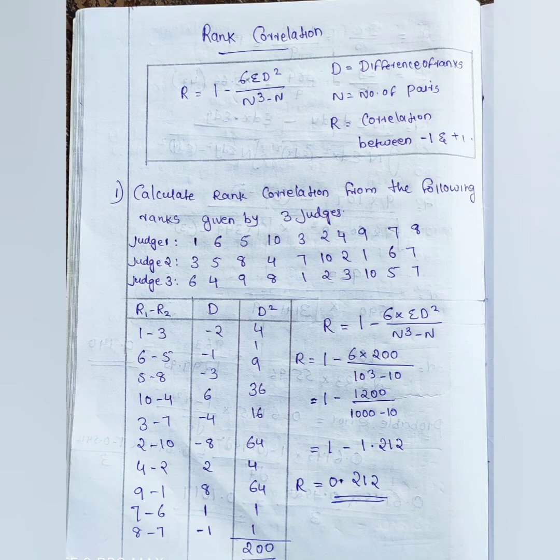The answer involves computing d, where d equals the difference of rank — that is, first rank minus second rank. Then we compute d squared. For example, 2 squared is 4, 1 squared is 1, and 3 squared is 9. We compute all d squared values and sum them up.